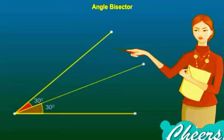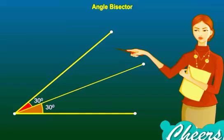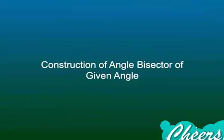An angle bisector is the line that divides an angle into two equal parts. Let us learn the steps to construct the angle bisector of a given angle.